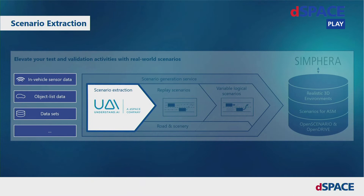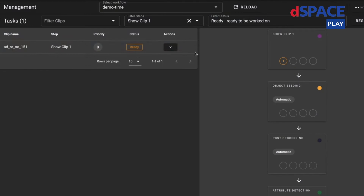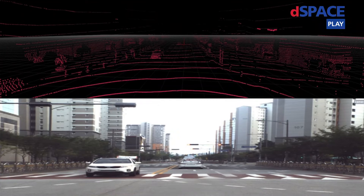The first step in our pipeline is the scenario extraction. Here we extract the trajectories and positions of all relevant objects from the provided sensor raw data, like camera videos or LiDAR point clouds. Let's have a sneak peek in our labeling tooling. What you can see here is our labeling task system. We can start a labeling task and switch to the Understand AI annotator, our labeling tool.